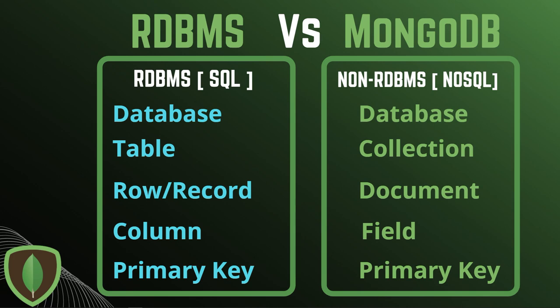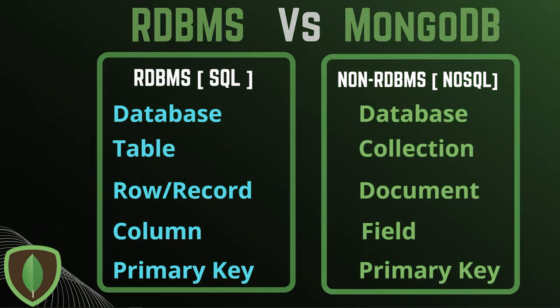Comparing relational database management systems and MongoDB: databases are the same, primary keys exist in both. In SQL (RDBMS), you have tables with rows and columns. In NoSQL (MongoDB), you have collections instead of tables, documents instead of rows or records, and fields instead of columns or attributes. A field is the key in the key-value pair system.